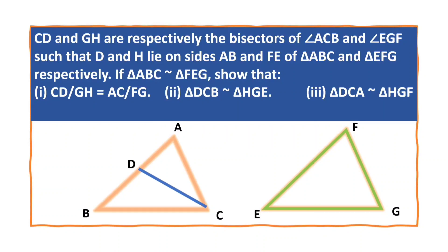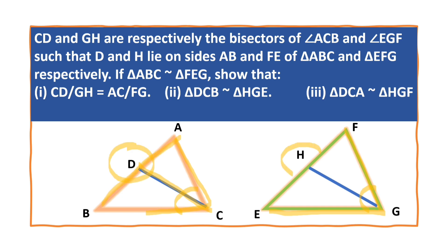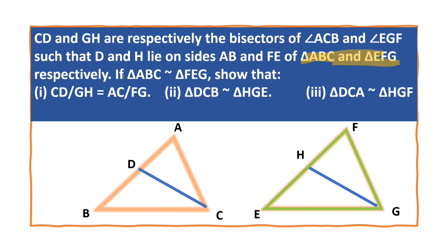CD and GH are the bisectors of angle ACB. CD is the bisector and GH is the bisector of angle FGA, such that D lies on the side AB and H lies on the side FE, of triangle ABC and triangle EFG respectively. And if triangle ABC is similar to triangle FEG,